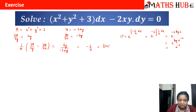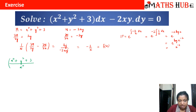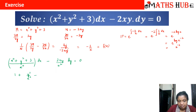Now let us multiply the non-exact equation by x^(−2). We get (x² + y² + 3) · x^(−2) dx − 2xy/x² dy = 0, which simplifies to (1 + y²/x² + 3/x²) dx − (2y/x) dy = 0.